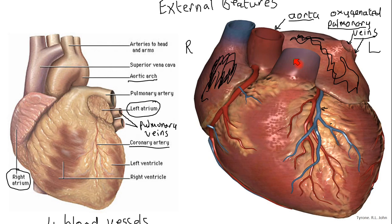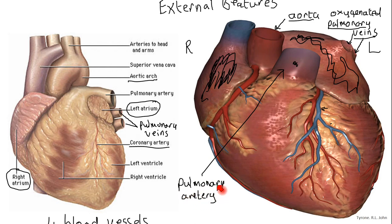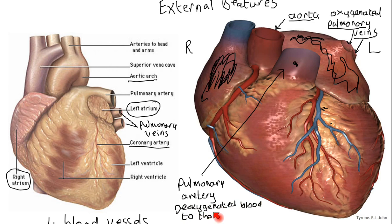The right side: this vessel here is known as the pulmonary artery. Because it's pulmonary, it's got to do with the lungs - it actually transports deoxygenated blood to the lungs. As we'll see when we look inside the heart, that pulmonary artery is actually attached to the right ventricle. And indeed the aorta is going to be attached to the left ventricle.